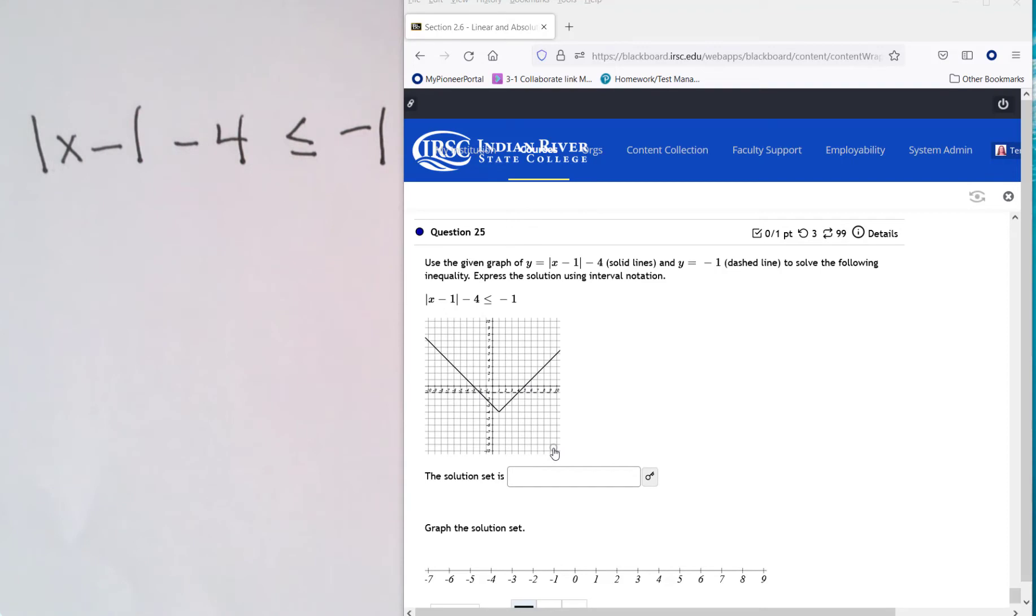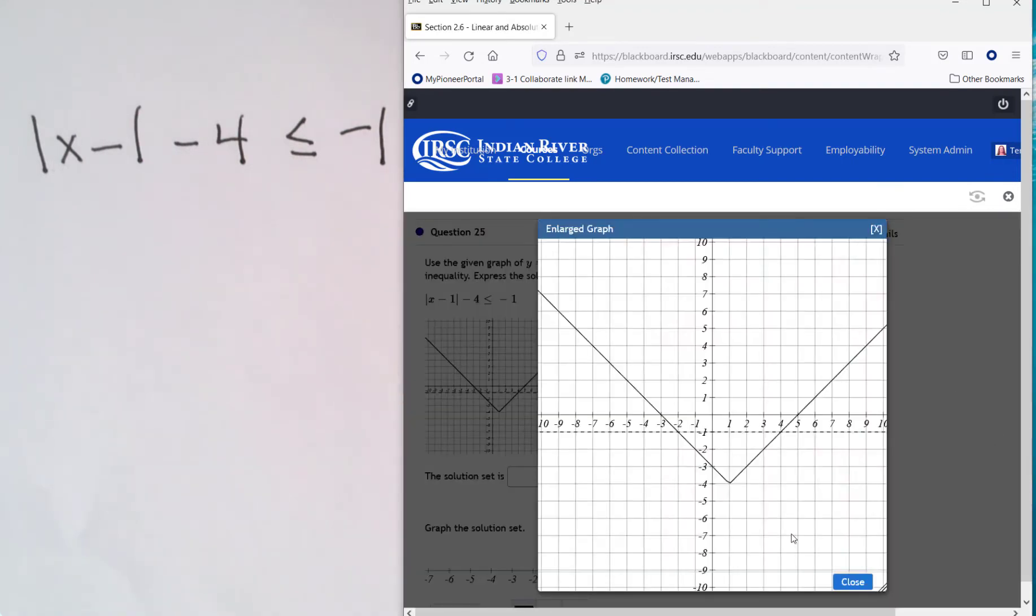Here's the absolute value graph. Let me blow it up bigger. So this v is your absolute value graph. When is it less than, so when is it below the dotted line.